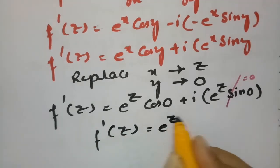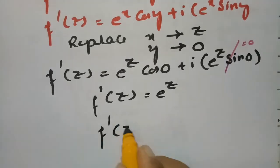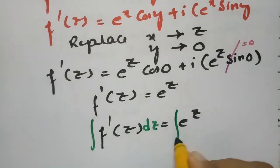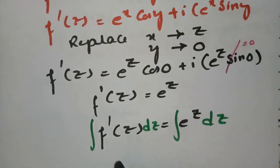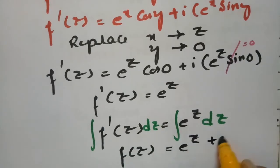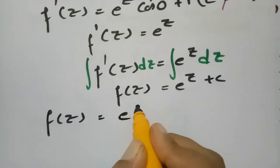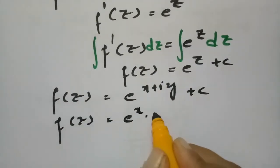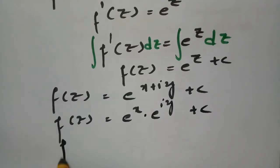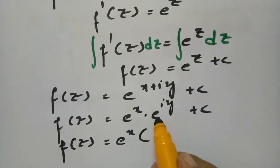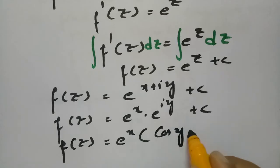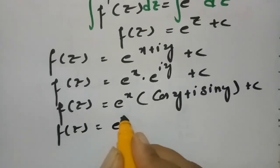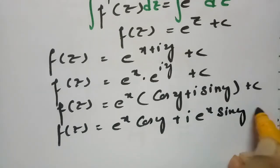Since f'(z) = eᶻ, integrating both sides gives f(z) = eᶻ + C. Now eᶻ = e^(x+iy) = eˣ · e^(iy). Using Euler's formula, e^(iy) = cos(y) + i sin(y), so f(z) = eˣ(cos(y) + i sin(y)) + C = eˣ cos(y) + i·eˣ sin(y) + C.